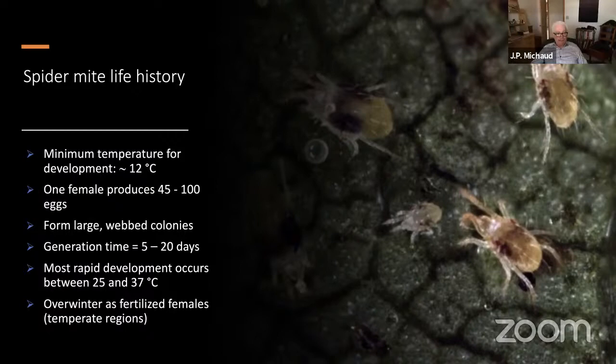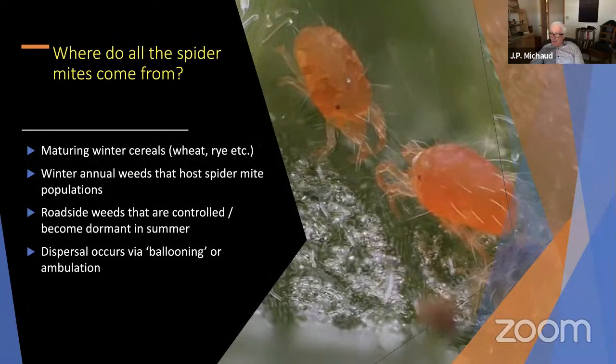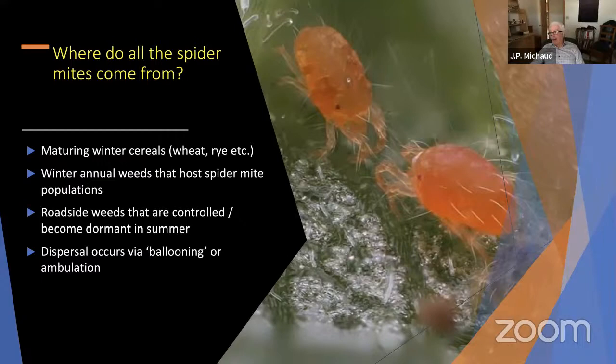Where are all these mites coming from? Even though spider mites do not damage wheat, they can begin building their numbers there and then leave in large numbers when the wheat matures. It's important to remember that the wheat crop also produces many beneficial insects such as lady beetles and lacewings that disperse into the landscape and help us with biocontrol of pests in the summer crops. Many winter annual weeds are also good hosts for mites, and when these winter annuals die naturally in the spring, the mites are again forced to disperse. We also have summer weeds that host mites, and those mites can be forced to migrate into crops when we control roadside weeds with herbicides.